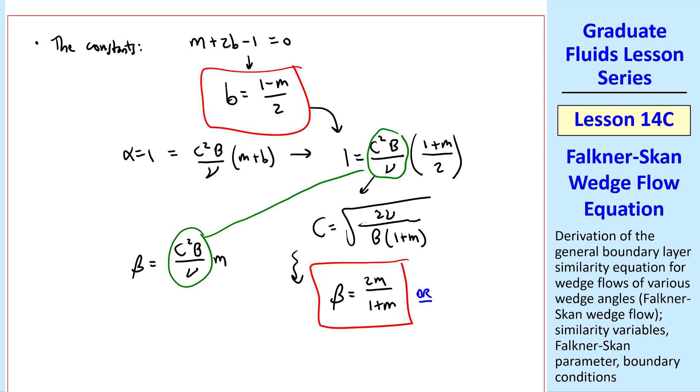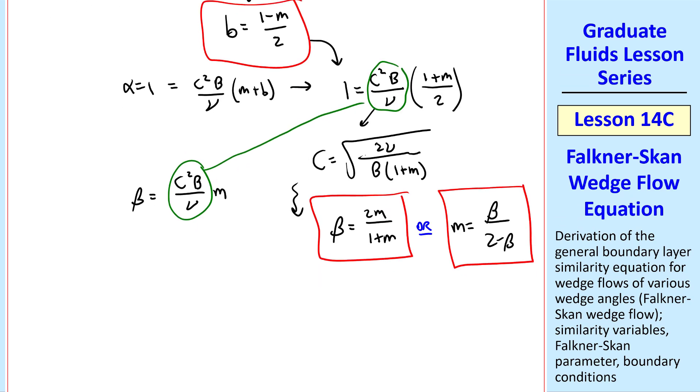Or in terms of m as a function of beta, m equal beta over 2 minus beta. And finally plugging that into this equation for c, we get square root of nu, 2 minus beta over B. We already specified alpha as 1. And now we have an expression for beta in terms of m, or vice versa, and our constant c.